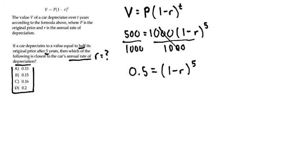From here, we need to get rid of the power of 5 on the R expression. To do that, we take the fifth root of both sides.